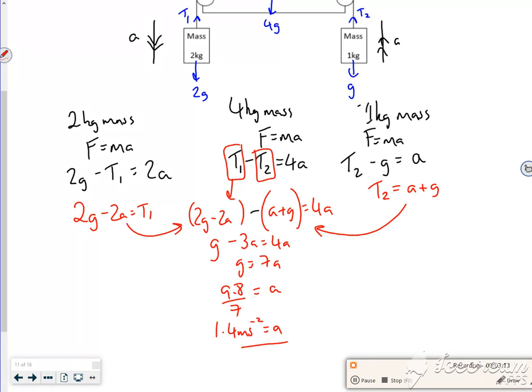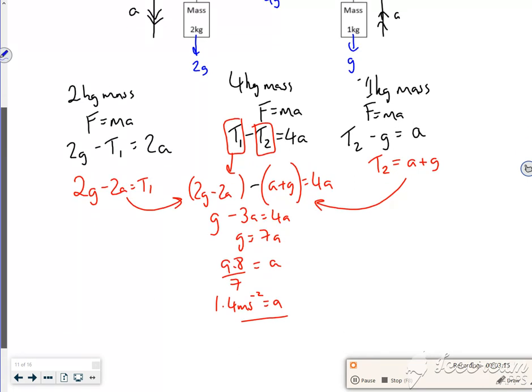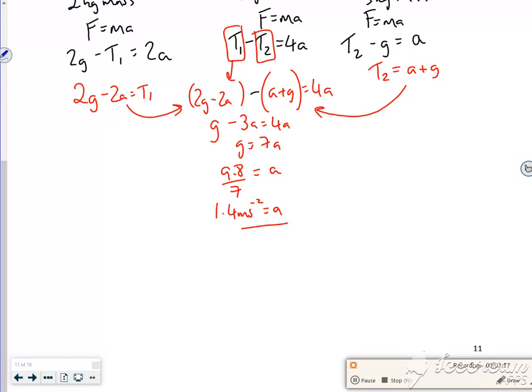Now I've got my acceleration, I can work out what my tensions are. So T1, we said, was 2g minus 2a. So T1 is 2 lots of 9.8 minus 2 lots of 1.4. So T1 is roughly 17 newtons.